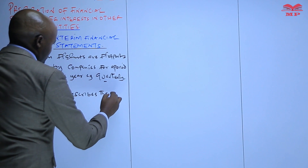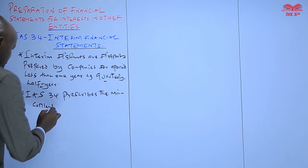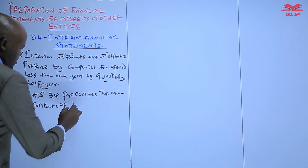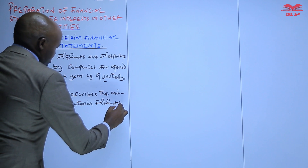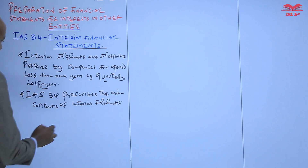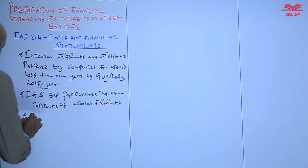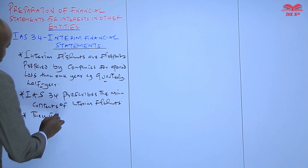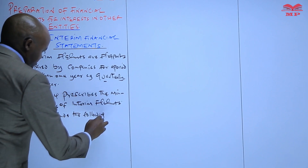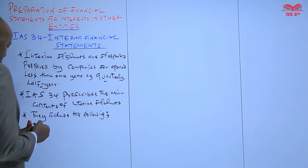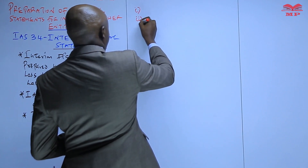IAS 34 prescribes the minimum content of interim financial statements. We can now look at what should be contained in these particular interim financial statements — those prepared on a quarterly or half-yearly basis. They include around five content items.